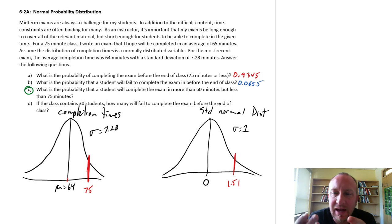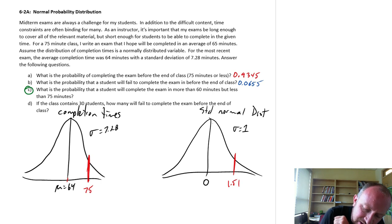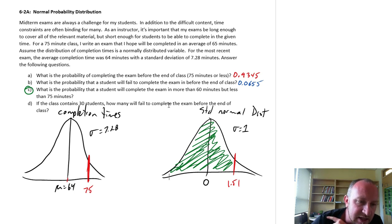So for Part A, we've calculated the probability that a student completes the exam in less than 75 minutes. So we have that as 0.9345. That was this whole area here to the left of 0.151. Then for Part B, we calculated what's the probability that a student fails to complete on time. So they complete in something more than 75 minutes and that was this region out here.